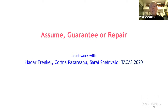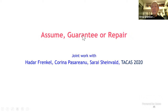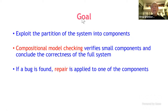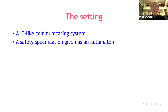Now I want to move to another notion of repair, which is quite different. It uses assume-guarantee, which is a widely used verification scheme. If this scheme fails to verify the program and finds a counter-example, then we suggest a repair. The goal is to exploit the partition of the system into components, use compositional model checking to verify small components, and conclude the correctness of the full system. If a bug is found, we apply repair to one of the components.